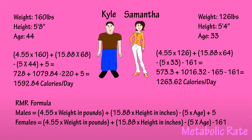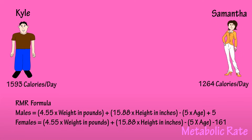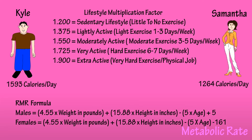We know that neither Kyle or Samantha are going to sit around all day, so there's a multiplication factor that we must use next. It's based on each of their lifestyles. The factor is as follows: 1.200 for a sedentary lifestyle, 1.375 for a lightly active lifestyle, 1.550 for a moderately active lifestyle, 1.725 for a very active lifestyle, and 1.900 for an extra active lifestyle.